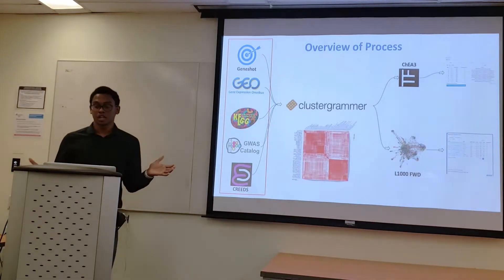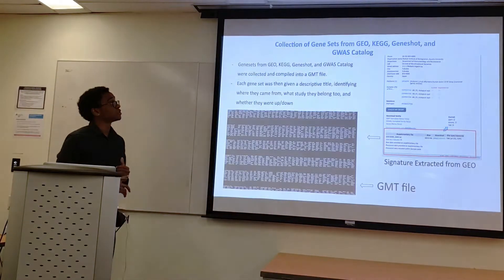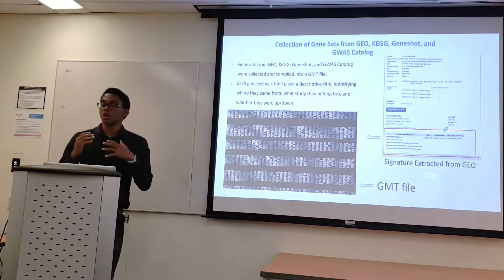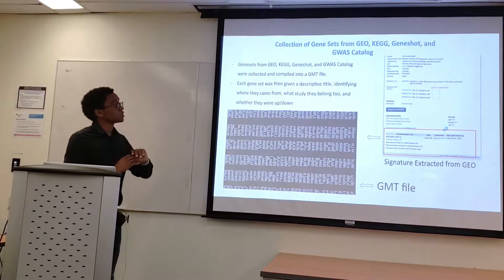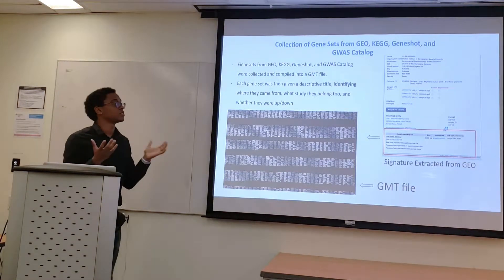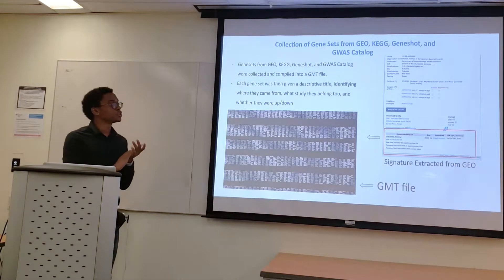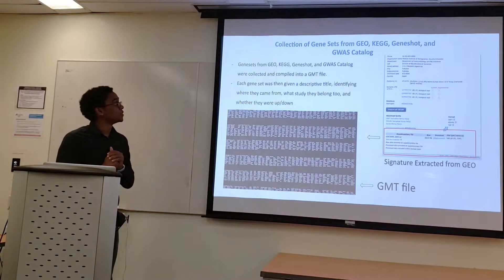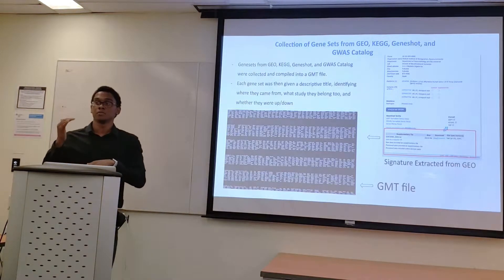We'll begin with the data collection phase. I used sources such as NIH's Geo, the Keg database, Keg pathways, GeneShot, and the GWox Catalog to query for terms related to Alzheimer's or dementia. I was collecting RNA-seq gene data and compiling it into a GMT file, which is a gene matrix transpose file. This format allows for ease of data integration between vast amounts of different sources and genes. Each gene set was given a descriptive title identifying where it came from, what its regulation was — whether up-regulated or down-regulated — and a metadata description.